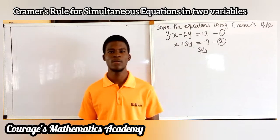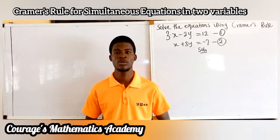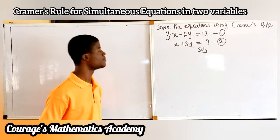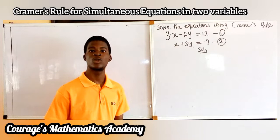Welcome back everyone to today's video lesson on solving simultaneous equations using Cramer's Rule. The rule was postulated by Gabriel Cramer, a Swiss mathematician. Let's see how we're going to apply that rule to solve these questions on the board. The two equations are: 3x minus 2y equals 12, and x plus 3y equals minus 7.